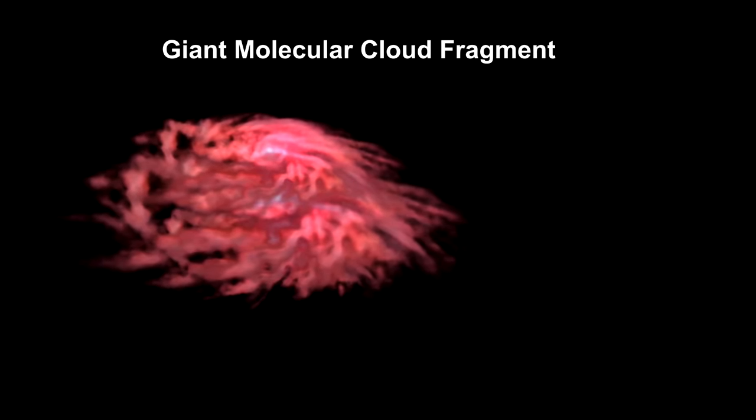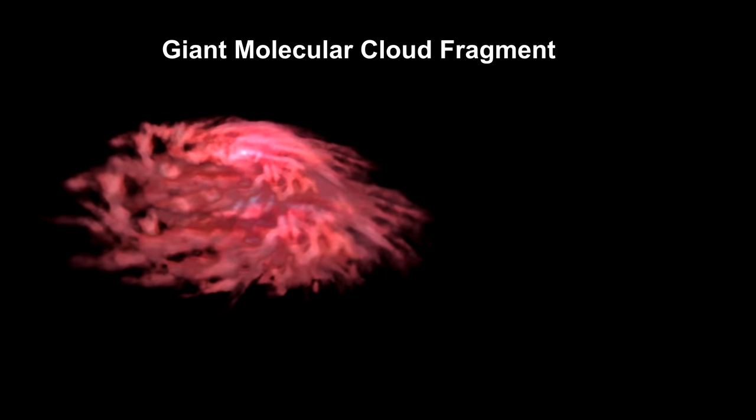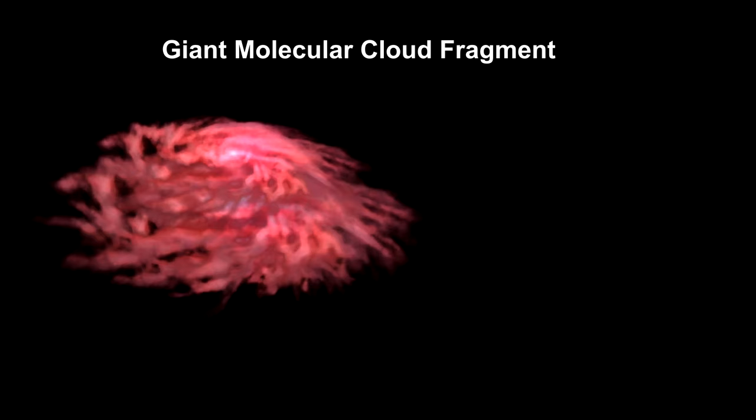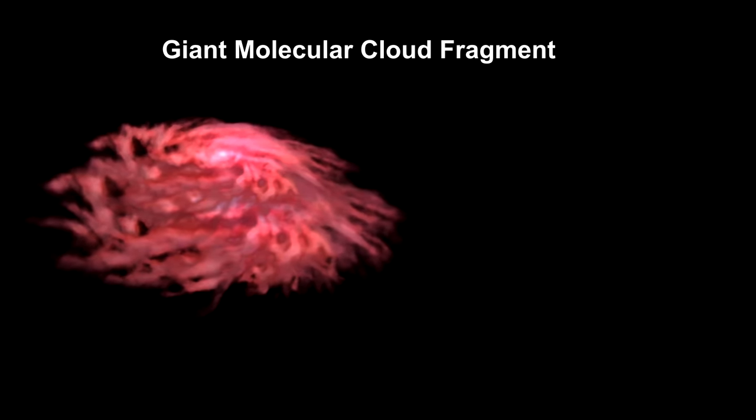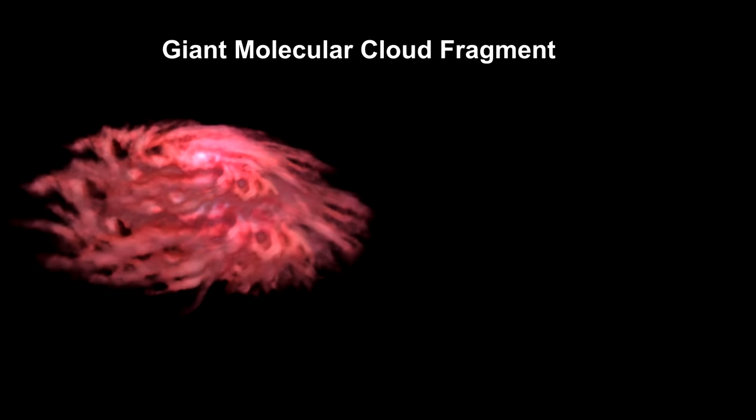The process from the beginning of the protostar phase to a fully fledged star is estimated to take from 1 to 200 million years. During this period, the debris in the disk is forming planets.